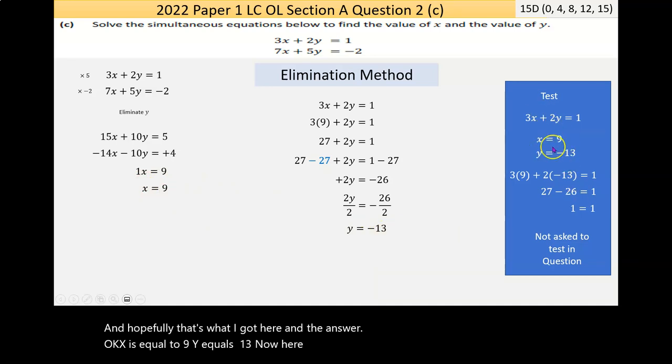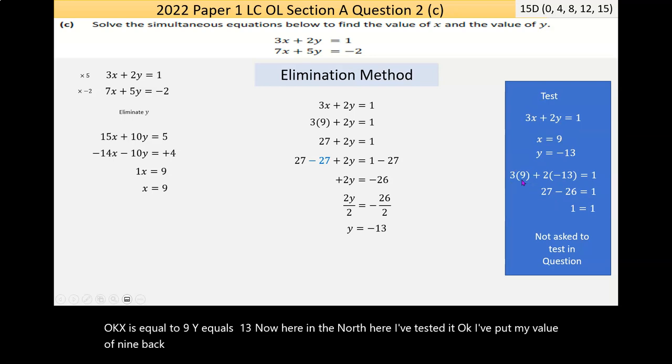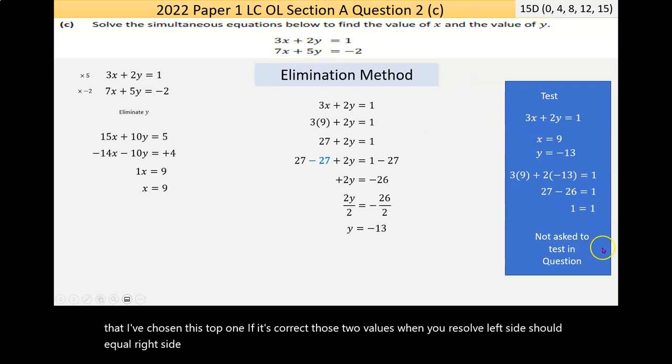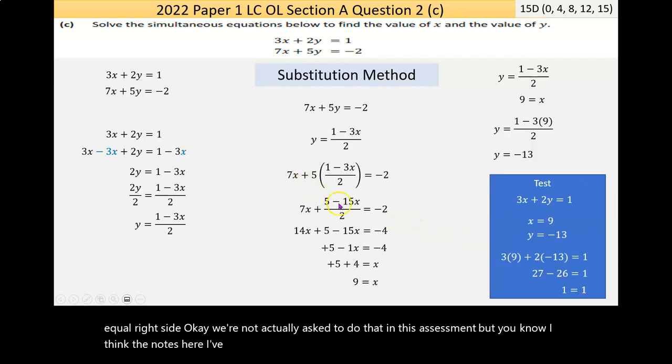Now, here in the notes here, I've tested it. I've put my value of 9 back in to either equation. I've put my value of negative 13 back into one of the equations, and I've chosen this top one. If it's correct, those two values, when you resolve, left side should equal right side. Now, we're not actually asked to do that in this assessment. But, you know, no harm.